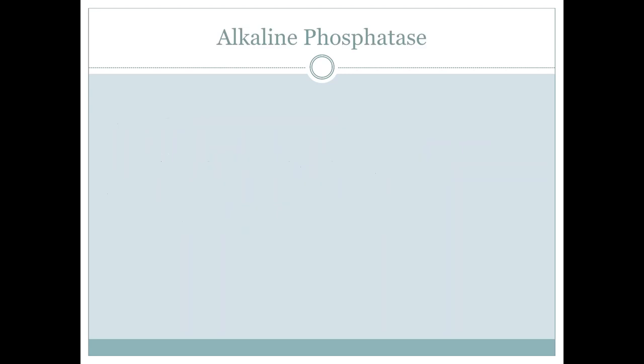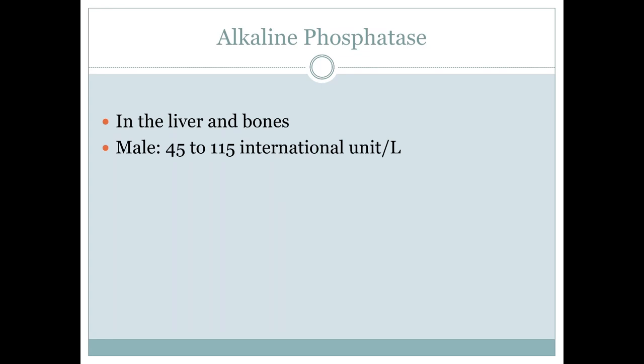The last liver enzyme is called alkaline phosphatase. This comes from the liver and bones, so you always want to make sure there's not a bone condition going on, especially if the other two liver enzymes are normal — that could be indicative of a bone disease. For males the normal range is 45 to 115, and for females it's 30 to 100. This is also based on age. A child who is growing and building bones might have a high alkaline phosphatase, and someone who breaks their arm might also show elevated alkaline phosphatase while healing. So please note there are other reasons it can be elevated.